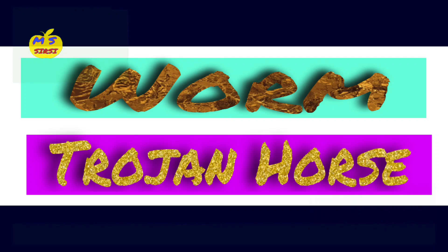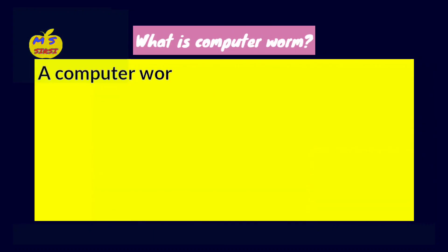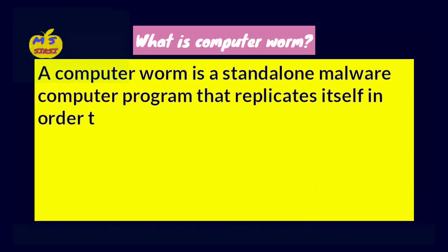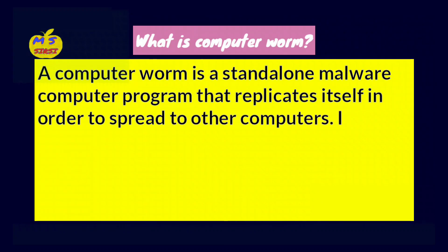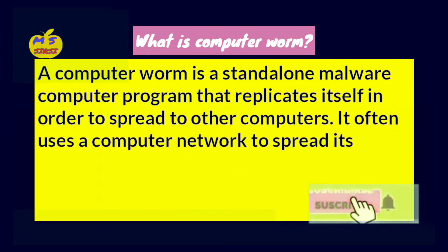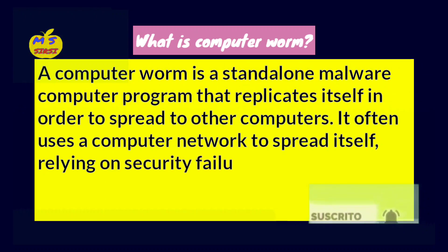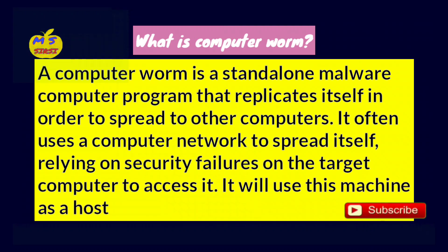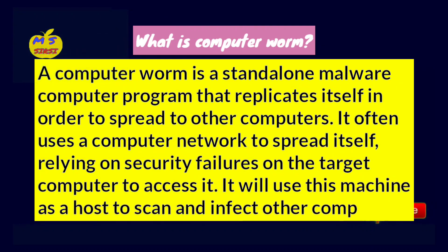So friends, पहले हम लोग Worm का Definition समझेंगे. What is Computer Worm? A Computer Worm is a standalone malware computer program that replicates itself in order to spread to other computers. It often uses a computer network to spread itself, relying on security failures on the target computer to access it. It will use this machine as a host to scan and infect other computers.